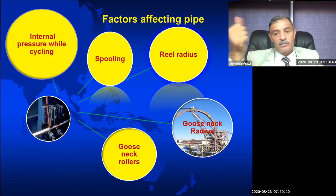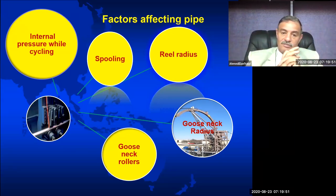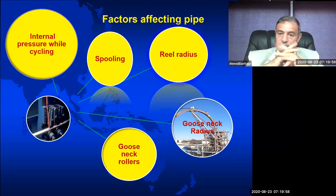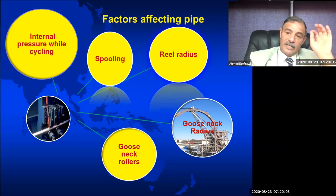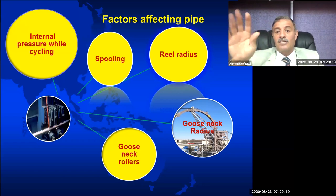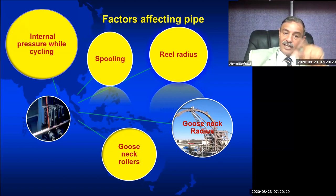Keep in mind that the main killer affecting pipe life is bending stress. So if I ask you what affects pipe life and give you 20 choices and ask you to select only four, look for the four that create bending stress — that is what you select first. Internal pressure while cycling, spooling, reel radius, gooseneck radius, gooseneck rollers — all relate to bending stress.